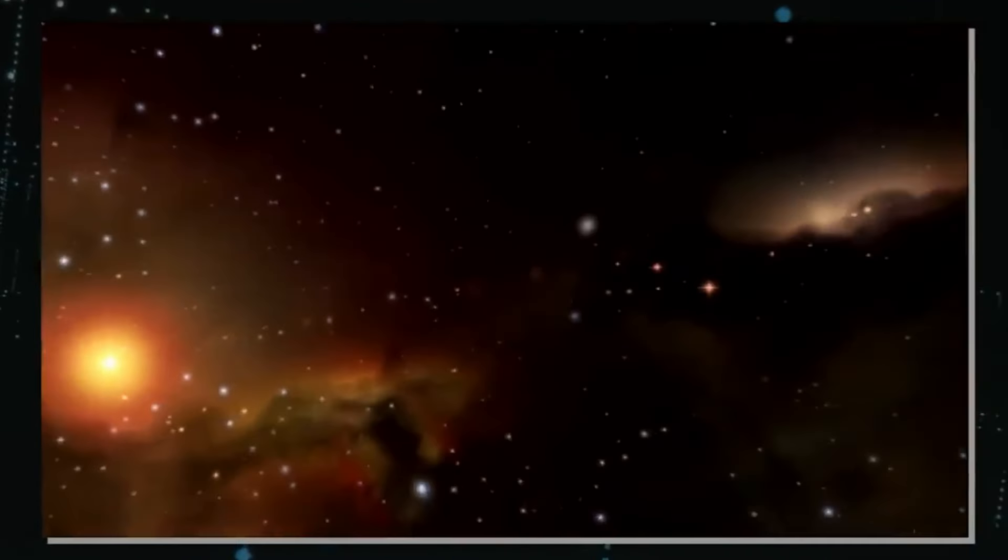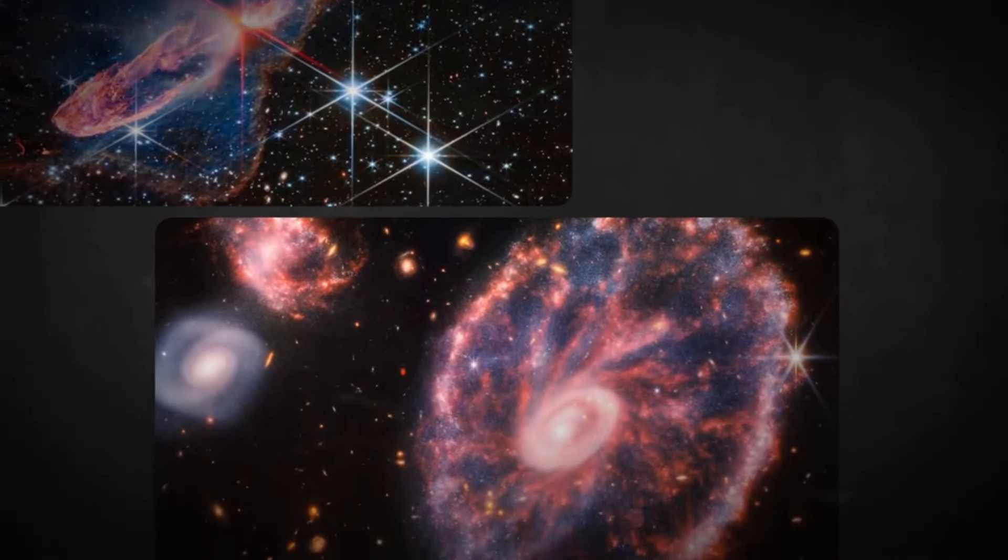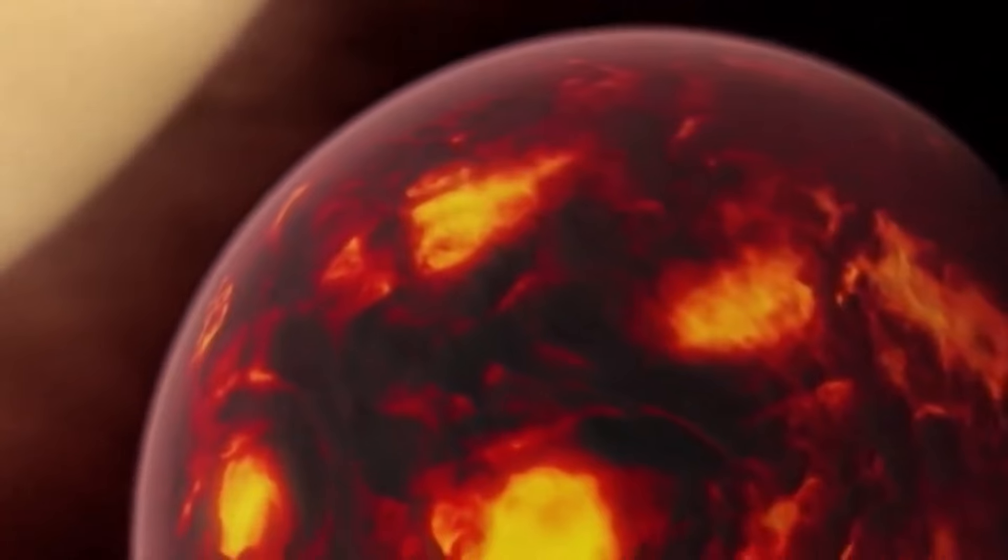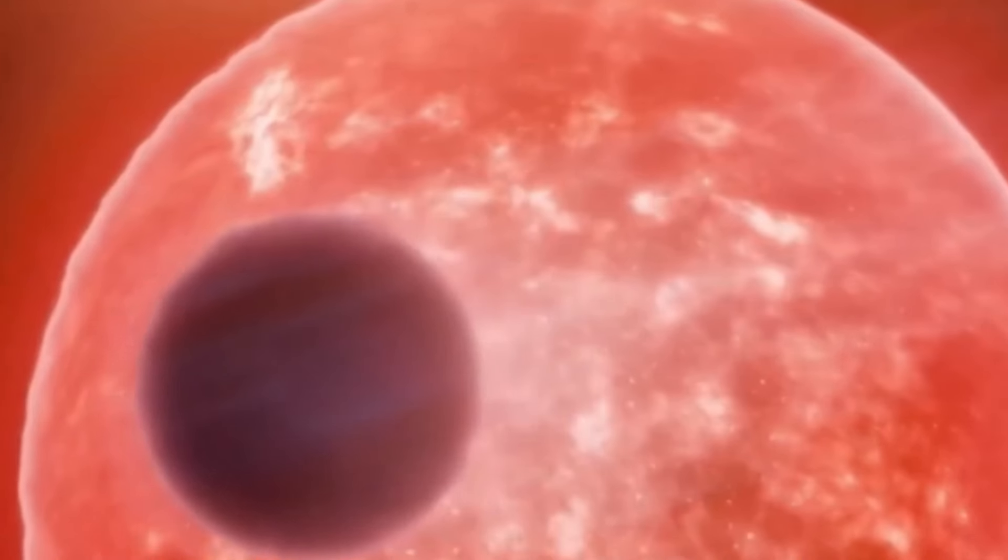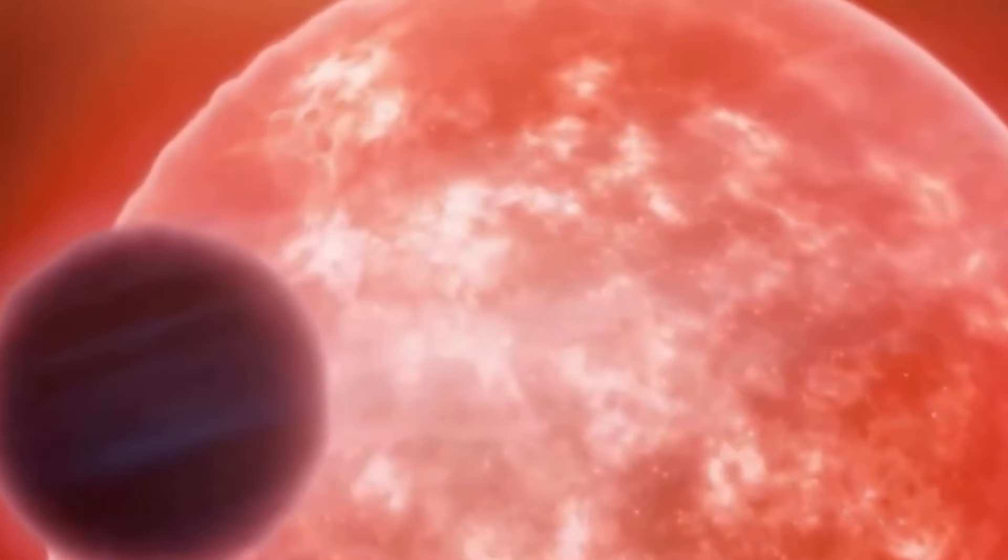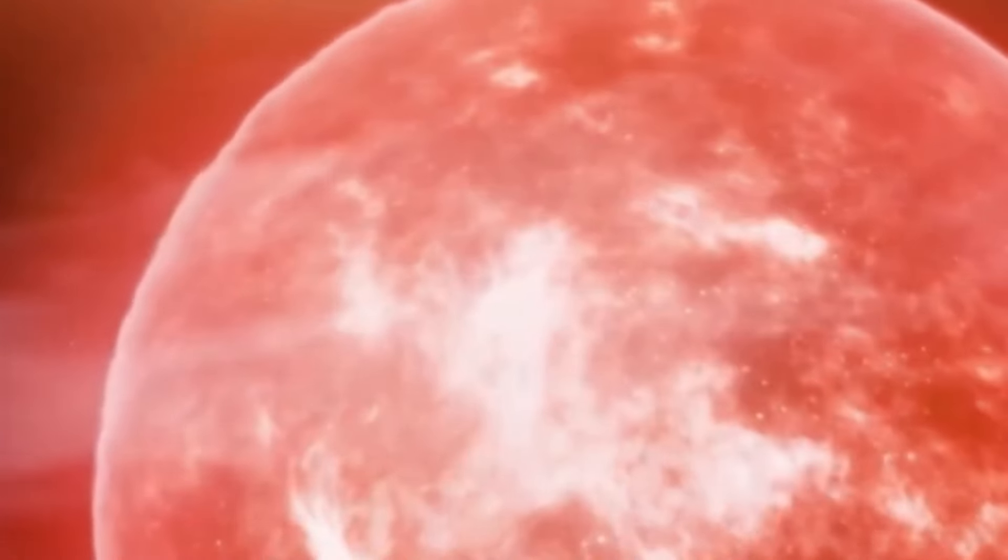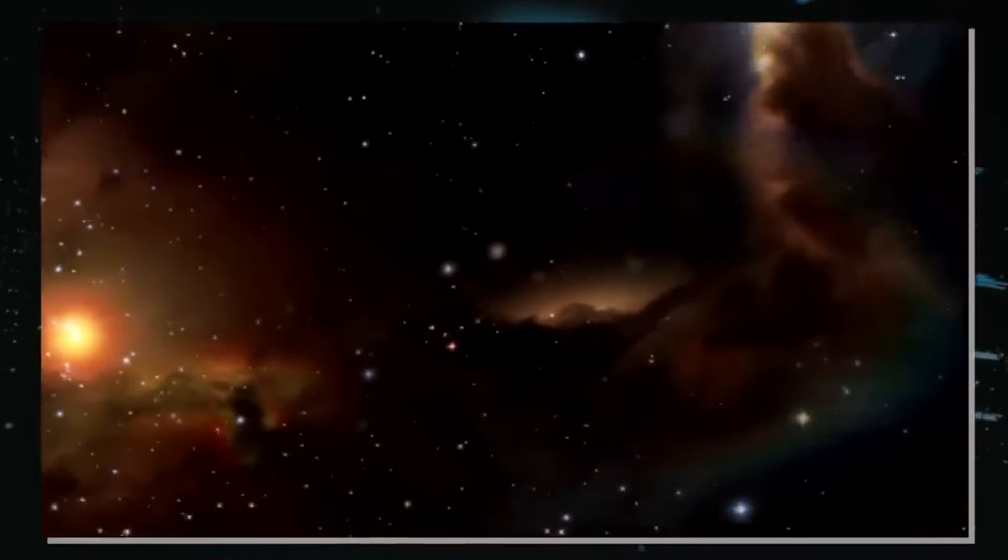It indicates that Proxima b might not be the blazing hell one would expect for a planet so close to its star. Despite the challenges posed by its close orbit and the potential loss of its atmosphere to solar winds, Proxima b offers compelling possibilities. If it retains a protective atmosphere capable of trapping heat, liquid water could conceivably exist on its surface, opening the door to the captivating prospect of habitability beyond Earth.